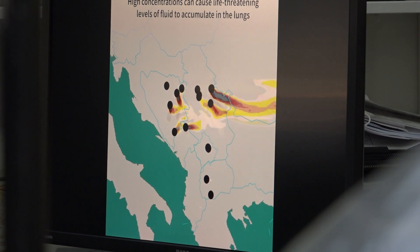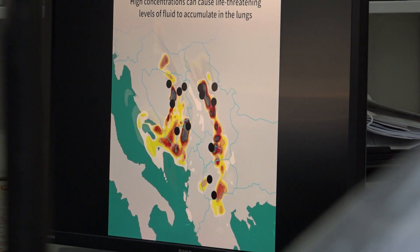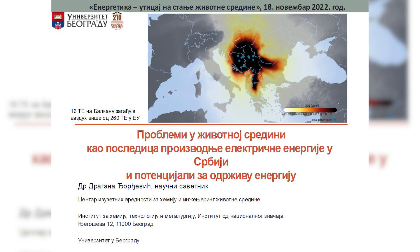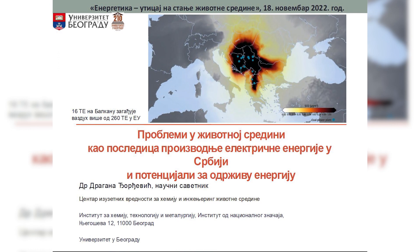Naravno u Srbiji je osam termoelektrana na ugalj, dve su na Kosovo od toga. I tih 16 termoelektrana na Zapadnom Balkanu zagađuje vazduh više u Evropi nego svih 260 termoelektrana koje postoje u Evropi. To je jedan veliki problem koji je nastao zbog zastarelosti tih uređaja koji se koriste, zbog odsustva redovnog održavanja sistema za prečišćavanje otpadnih gasova.